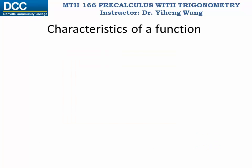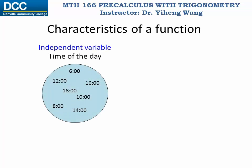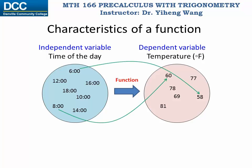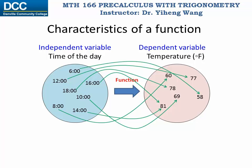From the previous example, if we collect all the independent variable values into one set, and all the dependent variable values into another set, the relation between these two sets is the function. And what the function does is to match each independent variable value to a dependent variable value. Once again, a specified independent variable value is matched with exactly one dependent variable value.